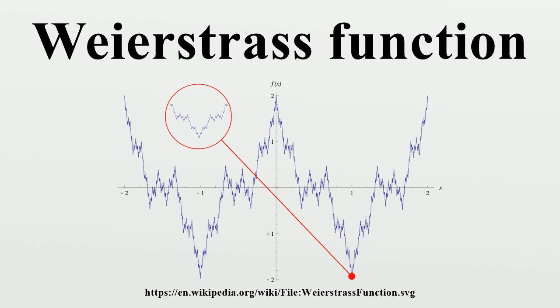In Weierstrass' original paper, the function was defined as the sum of a Fourier series, where b is a positive odd integer, and the minimum value of which satisfies these constraints.